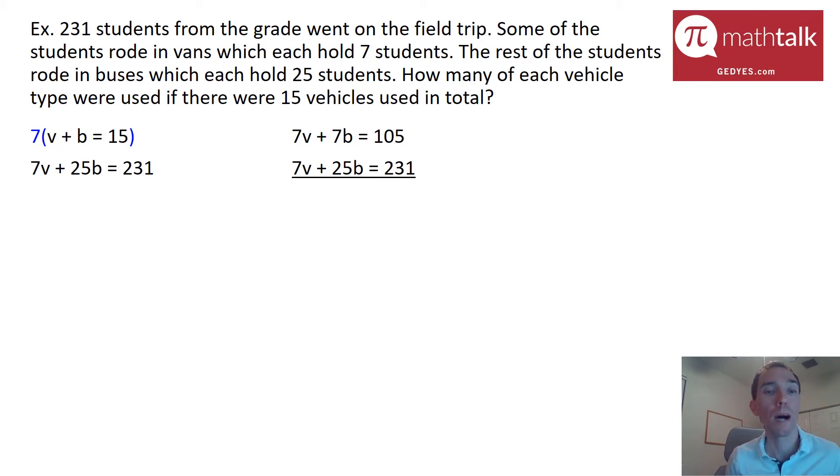So now my van coefficients are both 7, which means if I were to subtract the two, they would go away, which is great because that leaves me with just buses to figure out. And then I can go from there.